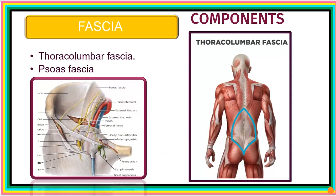We'll be talking about two major fascia in this posterior abdominal region: the thoracolumbar fascia and the psoas fascia, also called the psoas sheath. Here is the thoracolumbar fascia, and in this diagram we can also see the fascia covering the psoas major, which we call the psoas fascia or the psoas sheath.